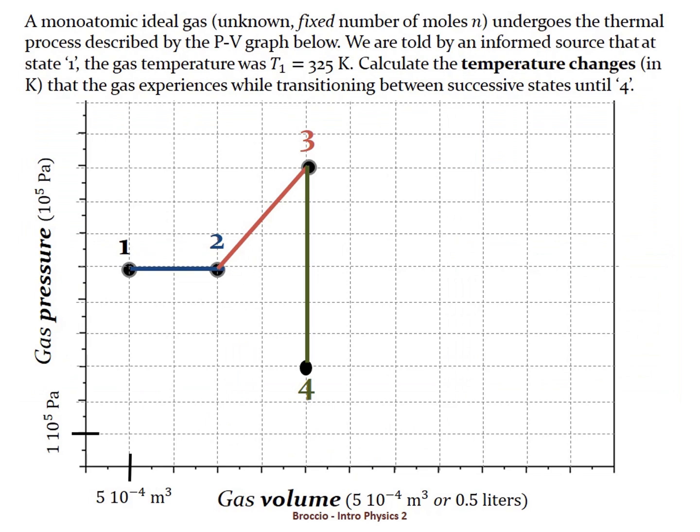Here is a solved problem. A monatomic ideal gas with a known fixed number of moles, N, undergoes the thermal process described by the PV graph below.